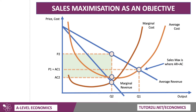So what we have in this diagram is two of the key objectives: profit maximisation at output Q2, and sales maximisation at output Q1.